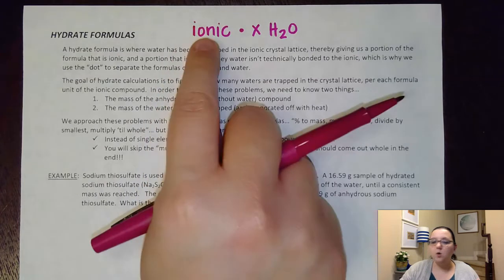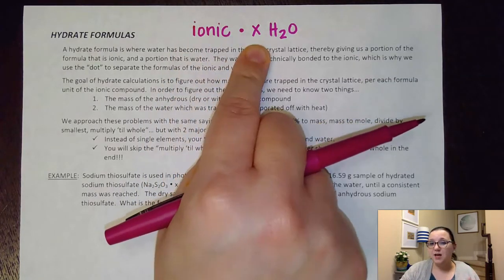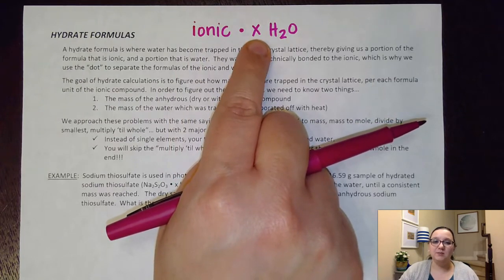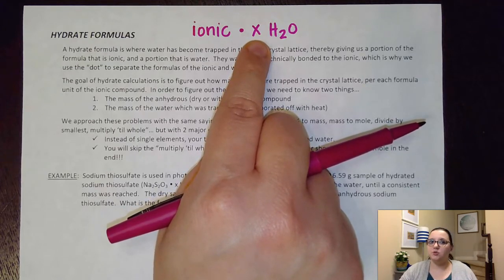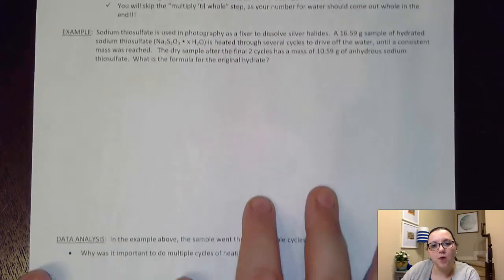The reason why is we always want this ionic compound to come out to be one. So I will warn you that sometimes, you know, lab data is not perfect. And so sometimes this doesn't come out cleanly to a whole number when you're actually doing this in lab. And so sometimes we just have to round to the nearest whole number when we're actually doing this.